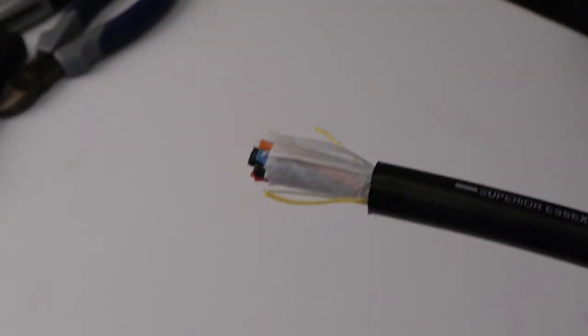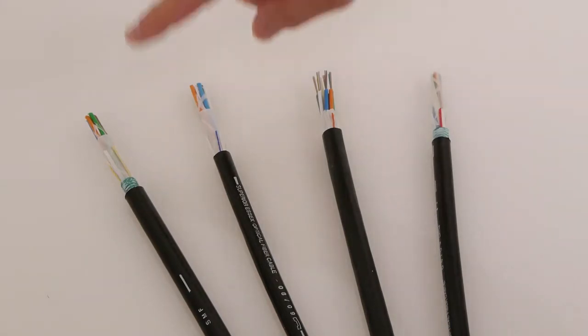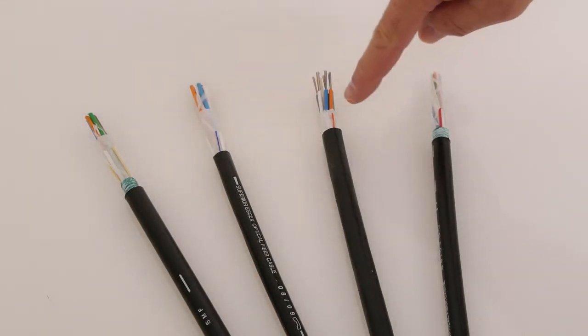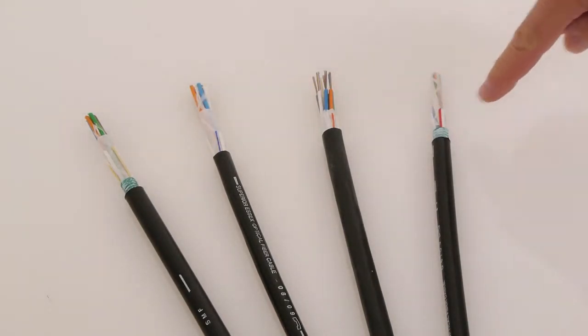Locate a rip cord below the jacket or armor at the end of the cable. There will be one or two rip cords, typically yellow, blue, orange, or red, depending on the cable type.